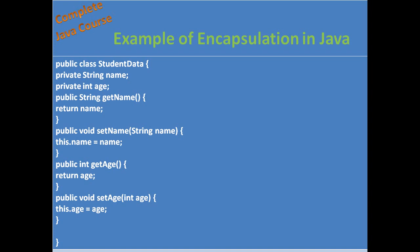We can access or assign values to these properties from outside or from another class only with the help of the public methods of that class. We have to use only the setter and getter methods of this class. We cannot directly access the class properties. This is called the encapsulation form of the class.